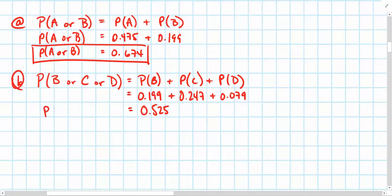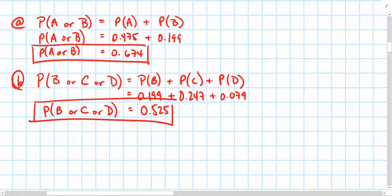And that sum is 0.525. So, the probability that a family earns $50,000 or more is the probability of event B, or C, or D occurring. And that is 0.525.